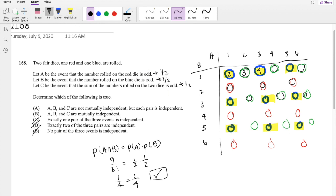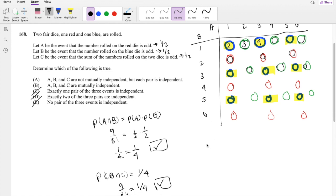Nope, because the sum adds up to 2, 4, and this will be 6, and so on. So we know the sum does not add up to odd. So we know that A, B, and C cannot happen at the same time. So these are not mutually independent, making the answer A.